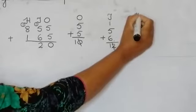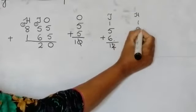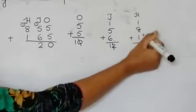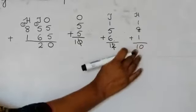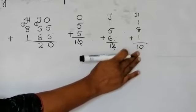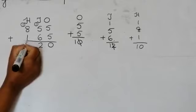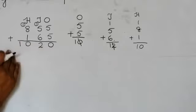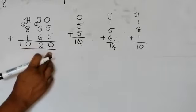At the end we will separate our hundreds. 1 plus 8 plus 1. So 1 plus 8 is 9, 9 plus 1 is 10. Now this time, because it is at the end, we will put 0 under hundreds and we will put the 1 in the next block. So we will get the answer 1020.